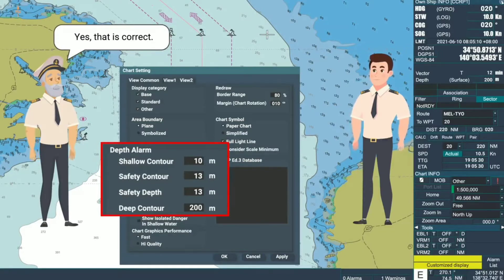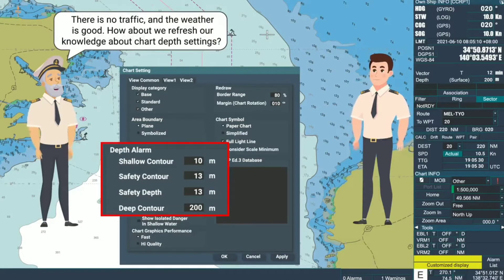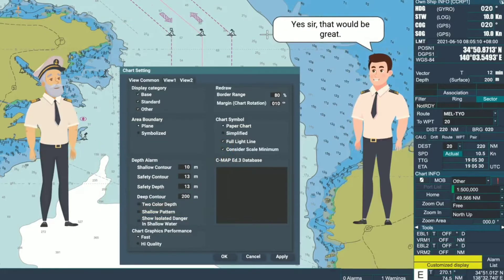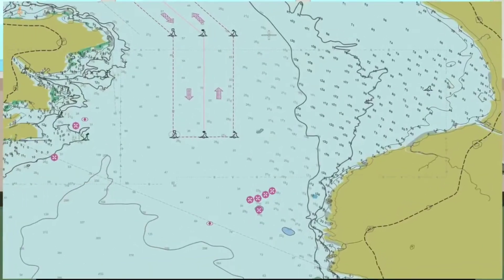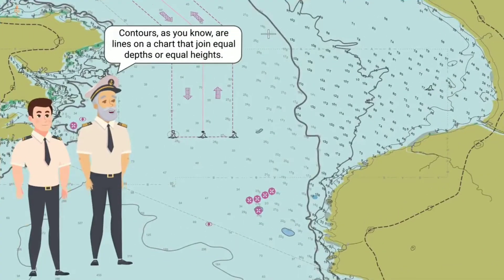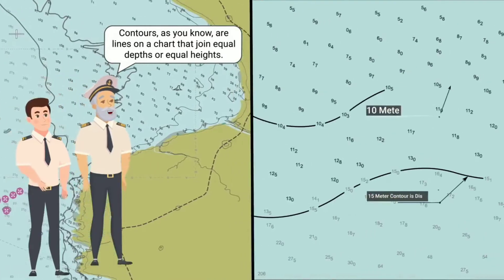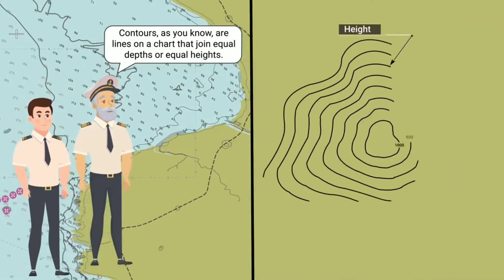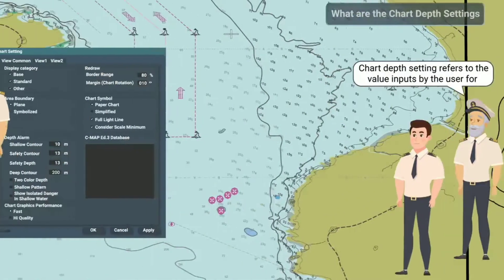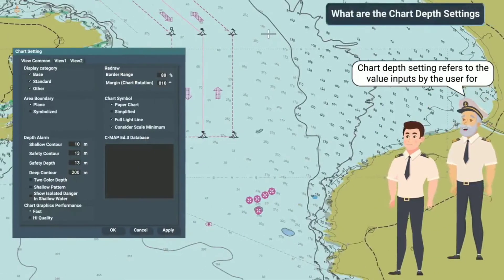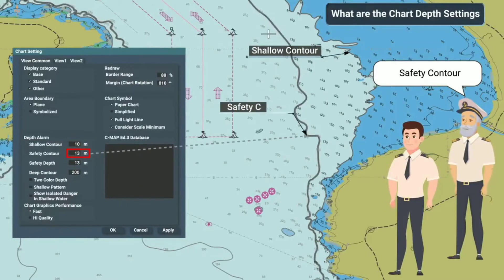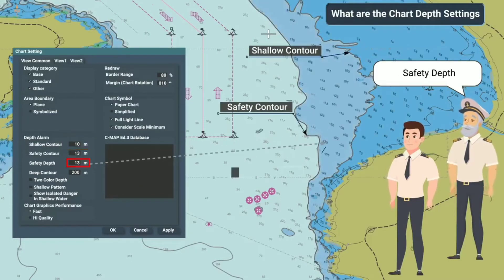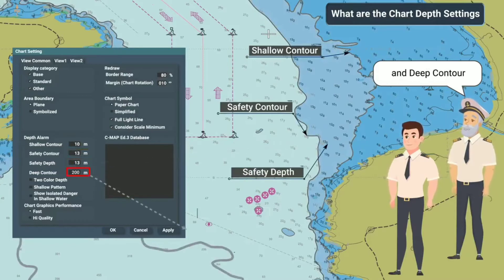Yes, that is correct. There is no traffic and the weather is good — how about we refresh our knowledge about chart depth settings? That would be great. Contours, as you know, are lines on a chart that join equal depths or equal heights. Chart depth settings refers to the value inputs by the user for the shallow contour, safety contour, safety depth, and deep contour.